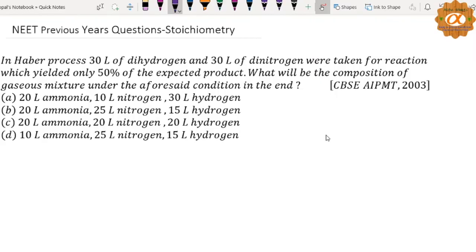AIPMT 2003 question: In Haber process, 30 liters of dihydrogen and 30 liters of dinitrogen were taken for reaction which yielded only 50% of the expected product. What will be the composition of gaseous mixture under the aforesaid condition in the end? N2 plus H2.